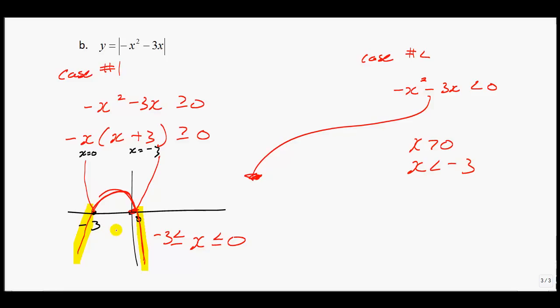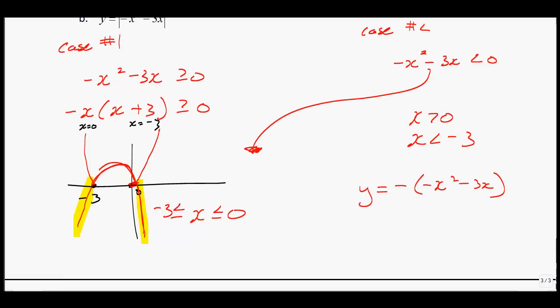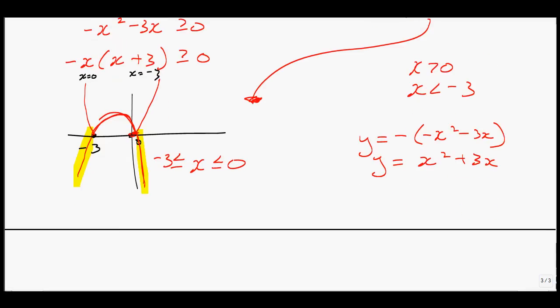But what would the equation of this new function look like? Well, that equation of that new function would just be y equals negative bracket negative x squared minus 3x. So just like I did for the question before, I just feed a negative in and we get y equals x squared plus 3x.